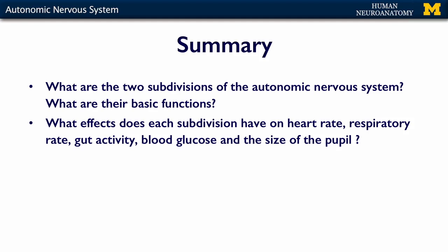So what should you know about these basic components of the autonomic nervous system? Know the two subdivisions of the autonomic nervous system and their basic functions. Know what effects each subdivision has on heart rate, respiratory rate, gut activity, blood glucose, and the size of the pupil. If you understand all of these concepts, then you're ready for the assessment.